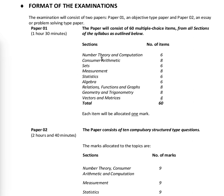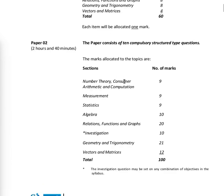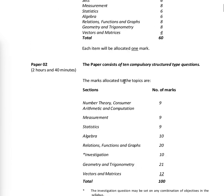There are 60 multiple choice items drawn from all sections of the syllabus: Number Theory and Computation, Consumer Arithmetic, Sets, Measurement, Statistics, Algebra, Relations Functions and Graphs, Geometry and Trigonometry, and Vectors and Matrices. All nine sections will be examined. Each item is allocated one mark, for a total of 60 marks in one hour and 30 minutes.